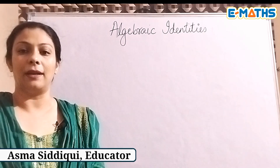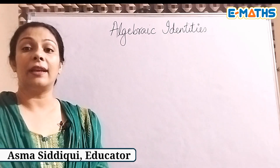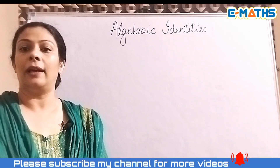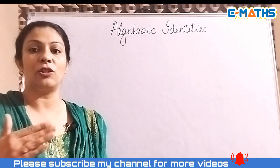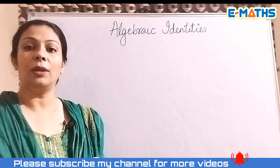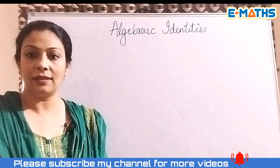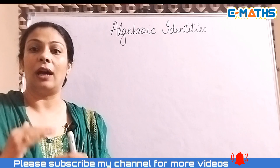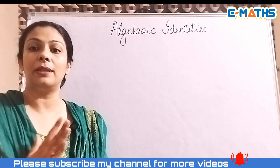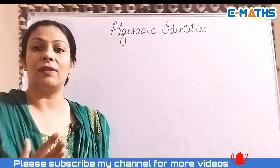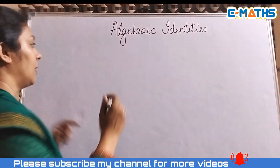Hello and welcome back to my channel eMaths. Today the topic I have chosen is algebraic identities, which is a very important chapter from grade 8 onwards. I'm going to discuss only three identities: (a+b)², (a-b)², and a²-b².